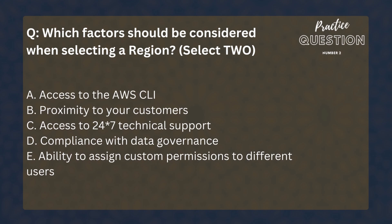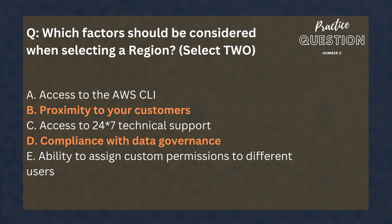Which factors should be considered when selecting a region? You need to select two answers. Options: Access to the AWS CLI, Proximity to your customers, Access to 24x7 technical support, Compliance with data governance, Ability to assign customer permissions to different users. The right answers would be Proximity to your customers and Compliance with data governance.